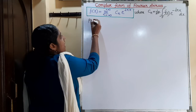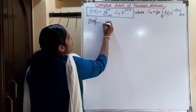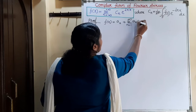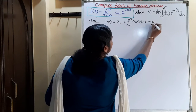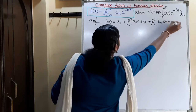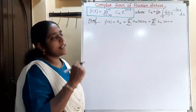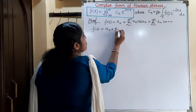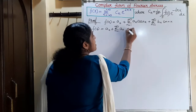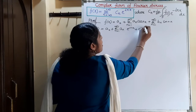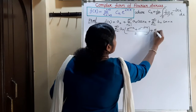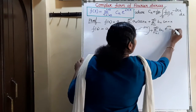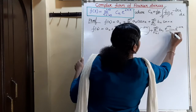Now we can see how this equation is derived. The general formula for the Fourier series is f(x) = a0 + Σ(n=1 to ∞) an·cos(nx) + Σ(n=1 to ∞) bn·sin(nx). We apply the complex forms of cos(nx) and sin(nx): cos(nx) = (e^(inx) + e^(-inx))/2, and sin(nx) = (e^(inx) - e^(-inx))/(2i).